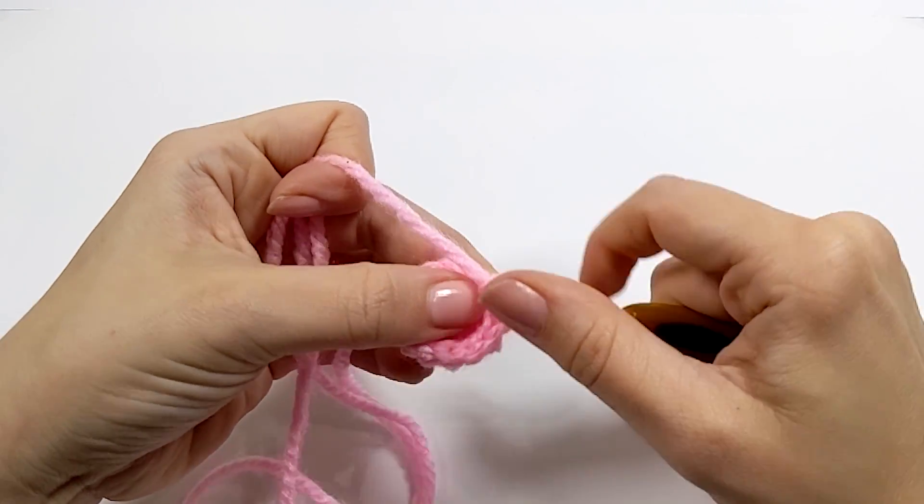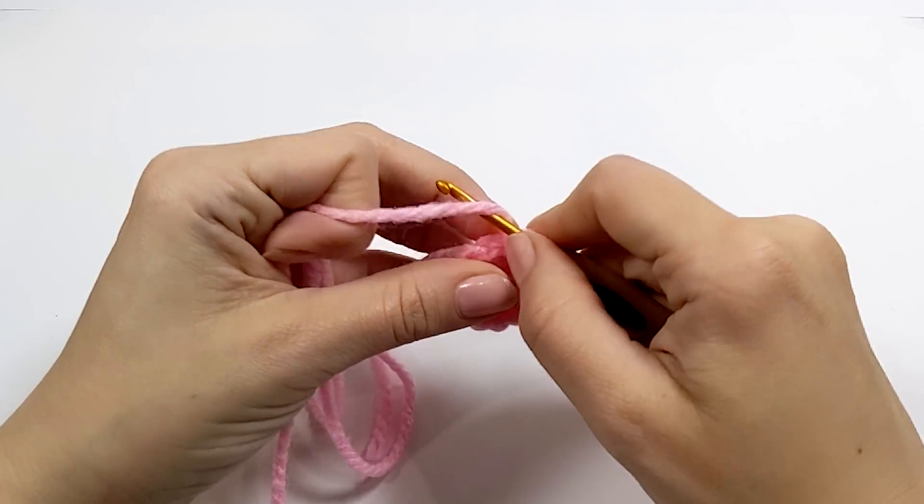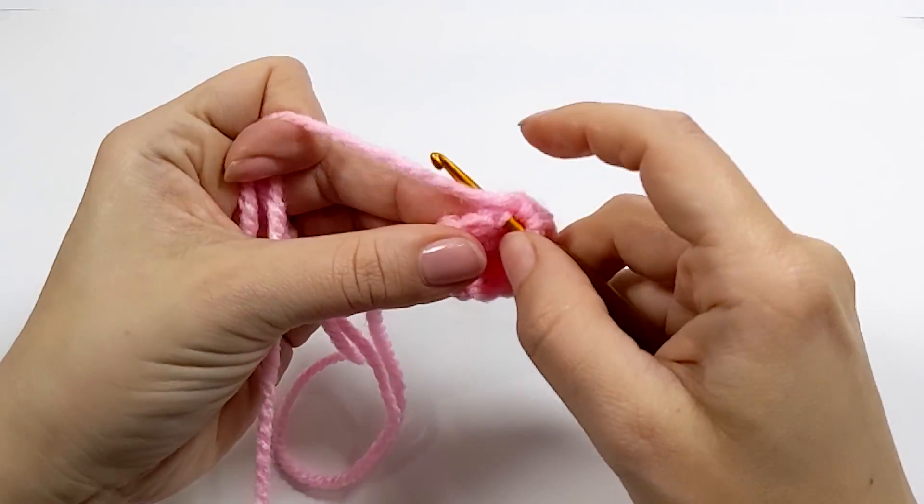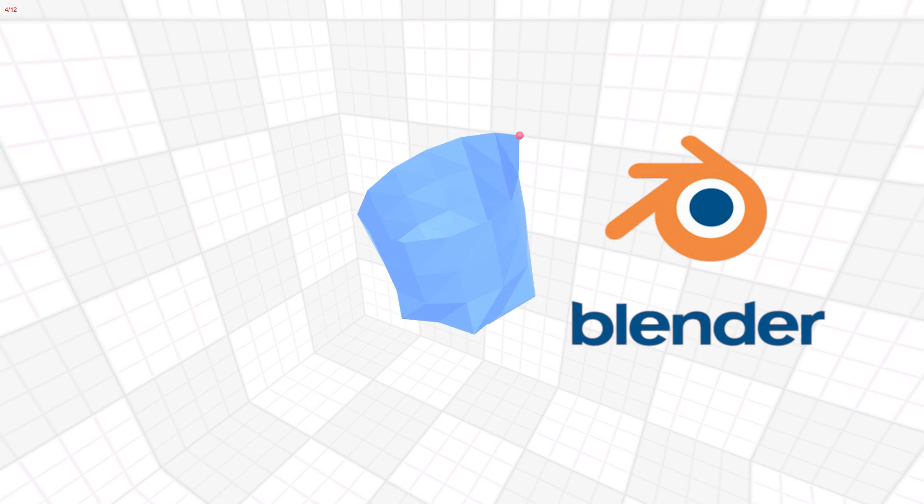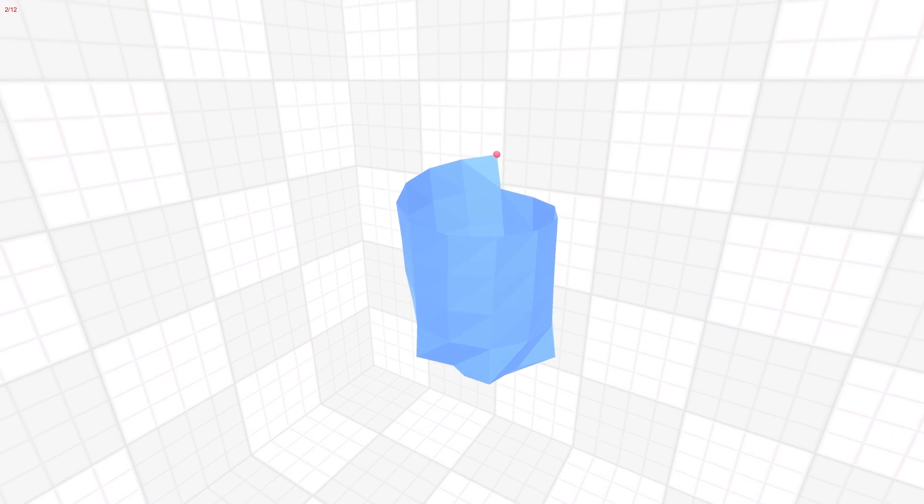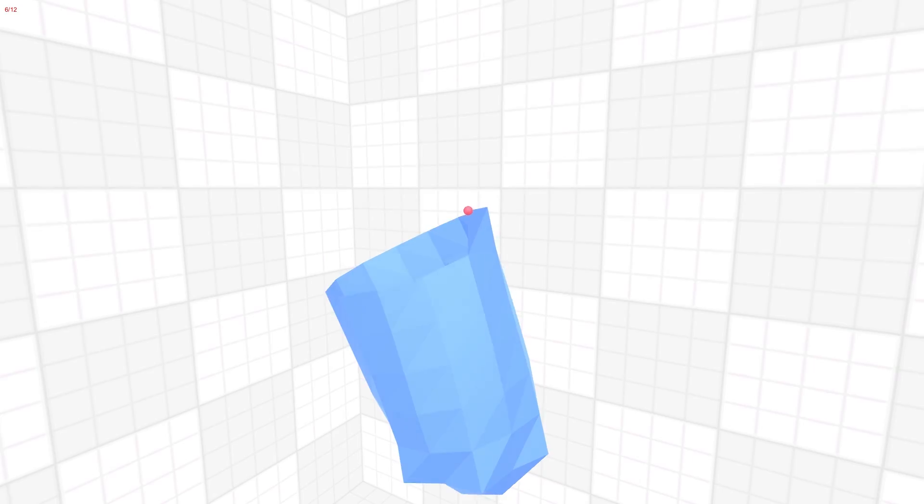Normally, crochet adds to a piece one stitch at a time as you spiral around. But what you're really doing is building a mesh, just like you would in something like Blender. In fact, I built this crochet simulator to show how that works.